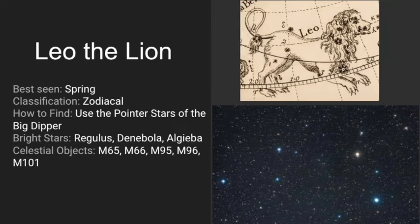This concludes our video for Leo the Lion. Leo is best seen during the spring months and highest in the sky during April. It is classified as a zodiacal constellation, meaning the sun passes through it. You can find it using the pointer stars of the Big Dipper — following one direction leads to Polaris, and the other direction leads right to Leo.